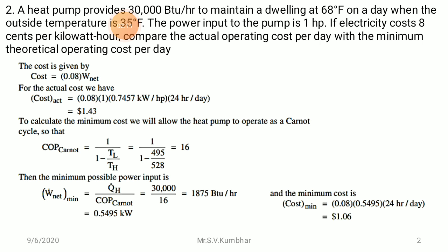The dwelling is maintained at 68°F on a day when the outside temperature is 35°F. The power input to the pump is 1 hp. If electricity costs 8 cents per kilowatt-hour, compare the actual operating cost per day with the minimum theoretical operating cost per day. The cost is equal to 0.08 per unit of W_net.